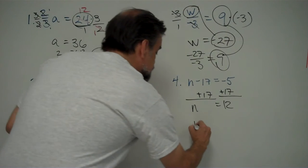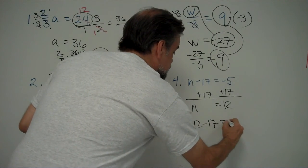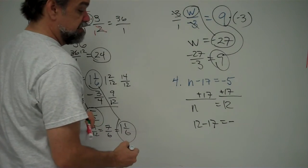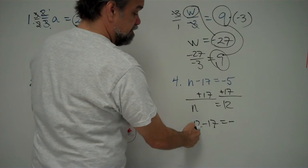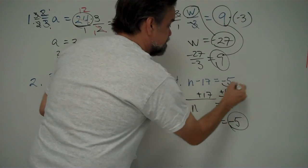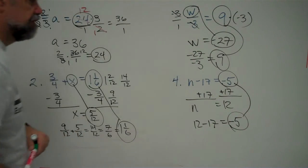Plug it in, and I get 12 minus 17. Little number minus big number is negative number, so I know my answer is negative. And 17 minus 12 is 5, so that means 12 minus 17 is negative 5. And sure enough, that's what I was looking for.